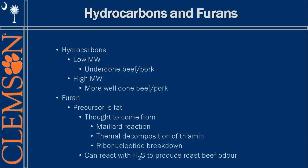For hydrocarbons, there are low and high molecular weight varieties. The higher the molecular weight, the more well-done the beef and pork usually are. Furans are derived from fat as their precursor. It's thought that during the Maillard reaction, furans are released and the thermal decomposition of thiamine contributes to that. Ribonucleotides also help enhance furan release, and furans can react with hydrogen sulfide to produce that roast beef odor. Their ratio can indicate how well done something is.